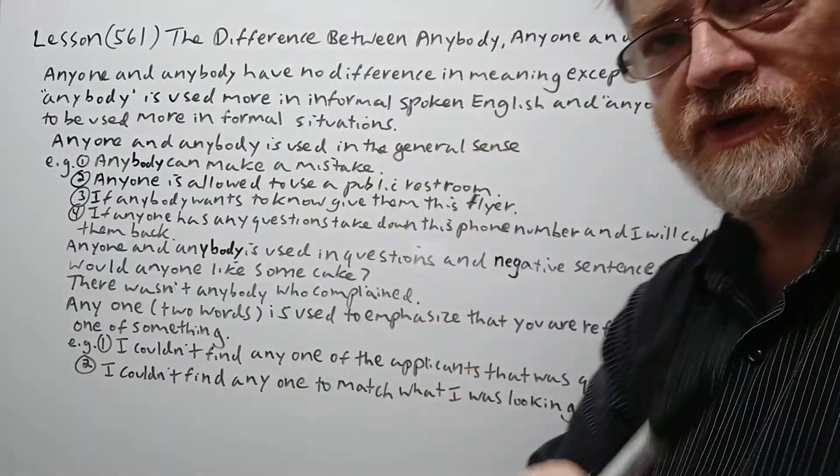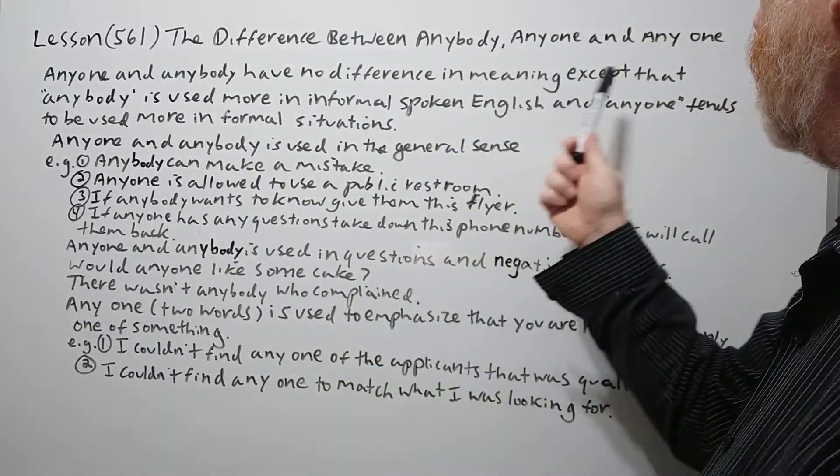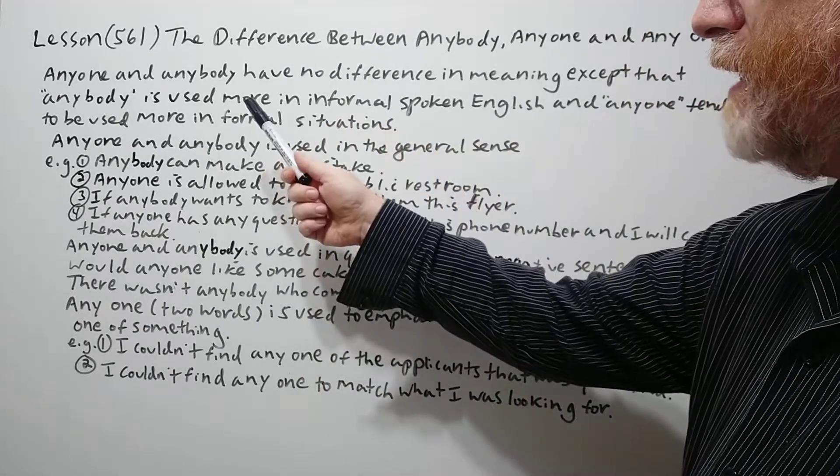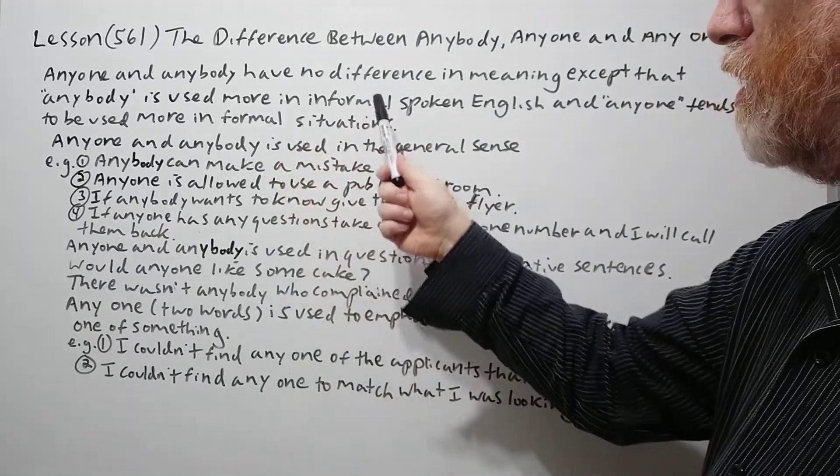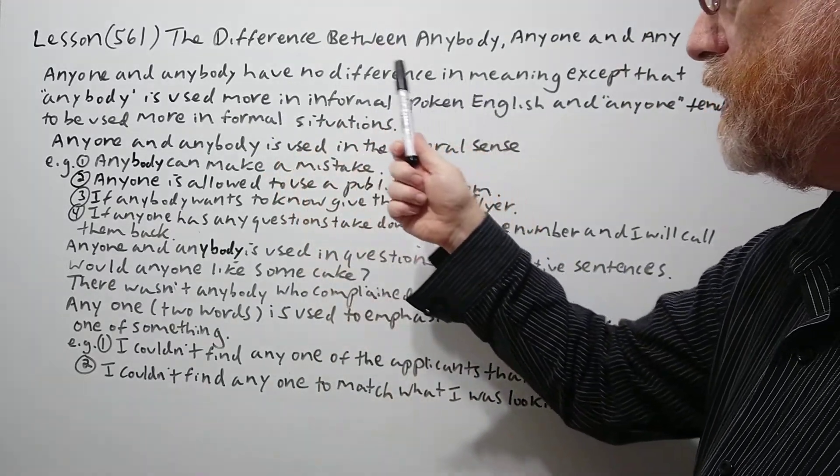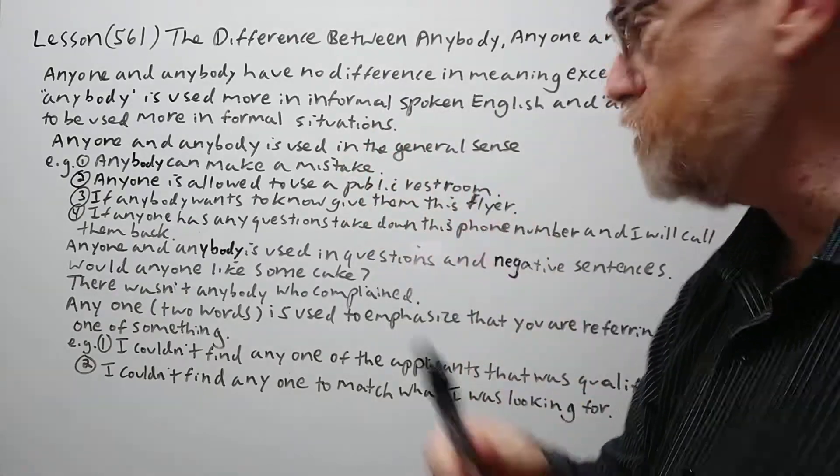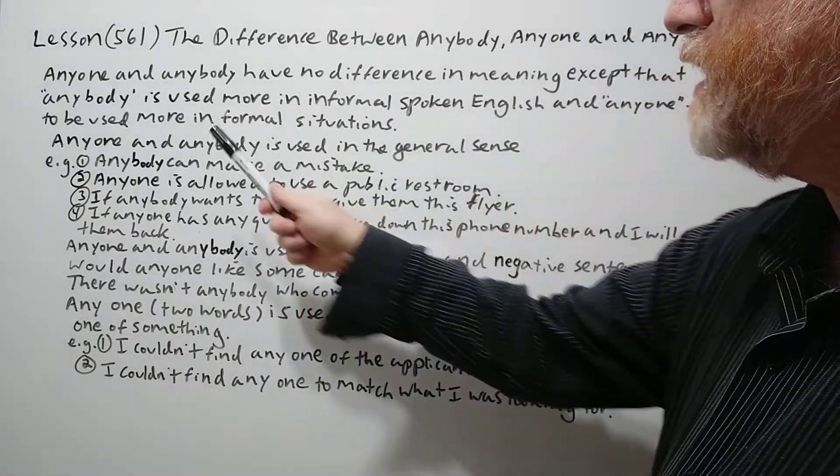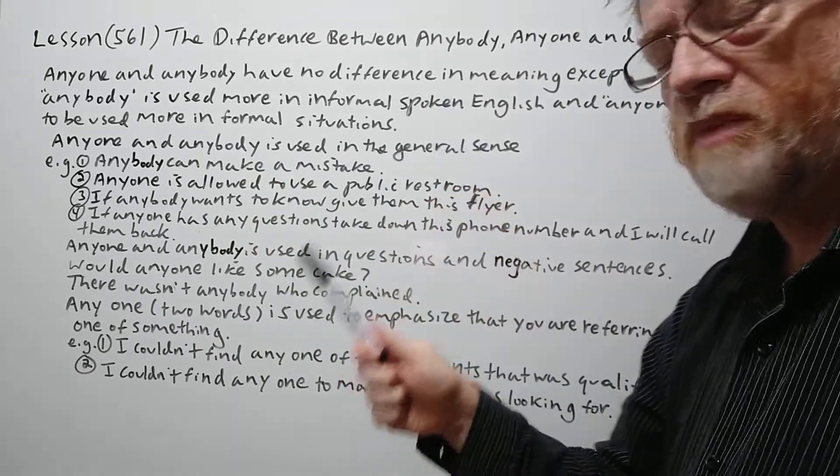Anyone and anybody have no difference in meaning except that anybody is used more often in informal English, and anyone tends to be used more in formal English.